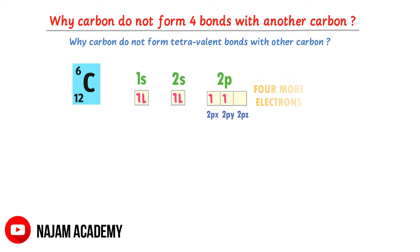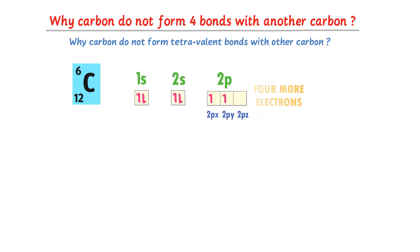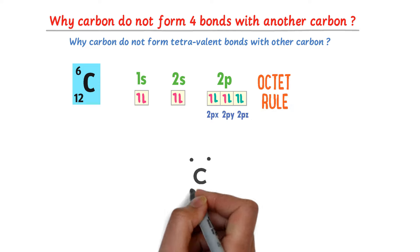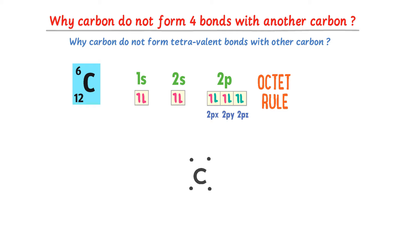Carbon needs four more electrons to attain stability by filling its orbitals, and after this its octet rule is completed. There are four electrons present in the outermost shell of a carbon atom, and it needs four more electrons to complete its octet.